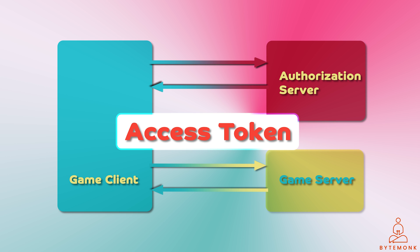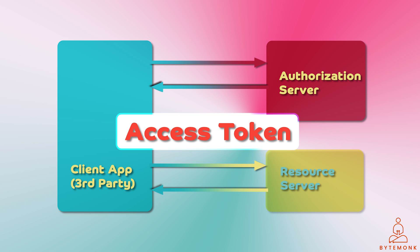The authorization server then returns the access token to the application, which can then use it to make requests to the resource server. The access token is typically used in conjunction with the authorization header, which is added to each request made to the resource server. The authorization header includes the access token, as well as the type of the token.